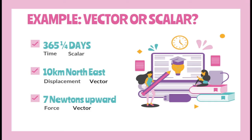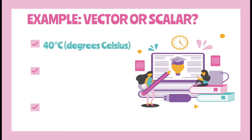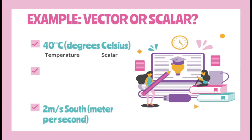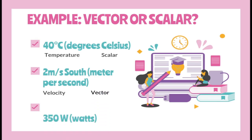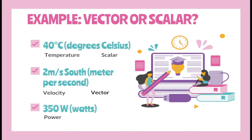How about 40 degrees Celsius? 40 degrees Celsius describes temperature, and temperature is a scalar quantity. 2 meter per second describes velocity, and velocity is a vector quantity. Lastly, 350 watts — 350 watts describes power, and power is a scalar quantity.